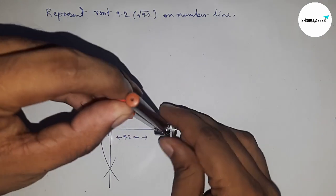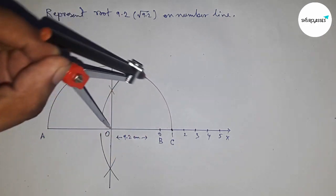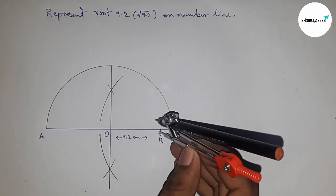Draw a semicircle through points A and C. Now, construct a 90 degree angle on point B.